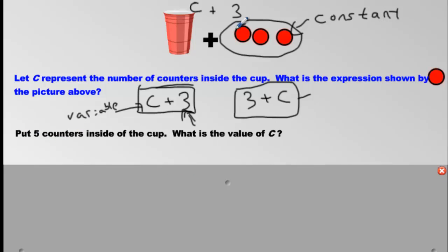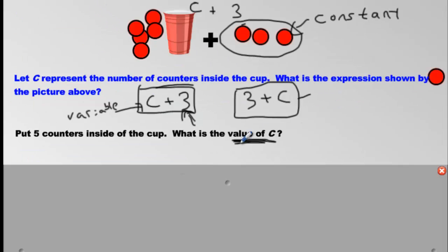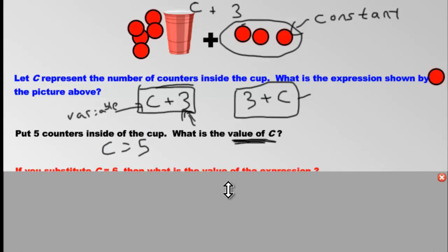Now it says put five counters inside of the cup. We will put five marbles inside. Now it is no longer a mystery. We know how much is in the cup. We have five. What is the value of C? A value is a known amount. Since we know that there is five marbles in here, C is equal to five. That's the value of C.